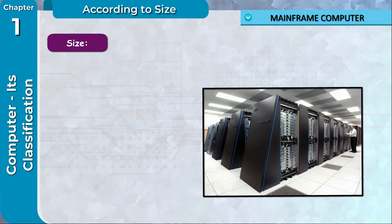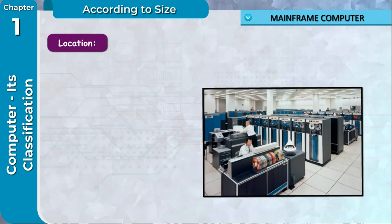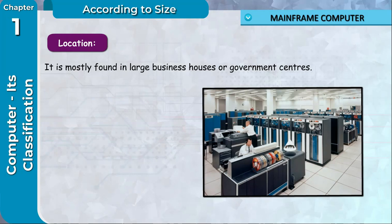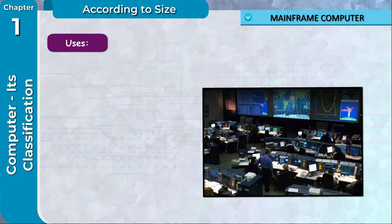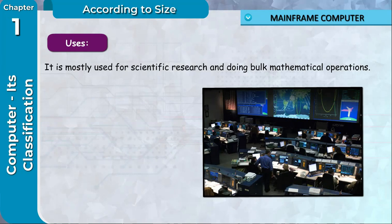Size: It is large, normally the size of a closet. Location: It is mostly found in large business houses or government centers. Speed: It can process up to millions of instructions per second. Uses: It is mostly used for scientific research and doing bulk mathematical operations.